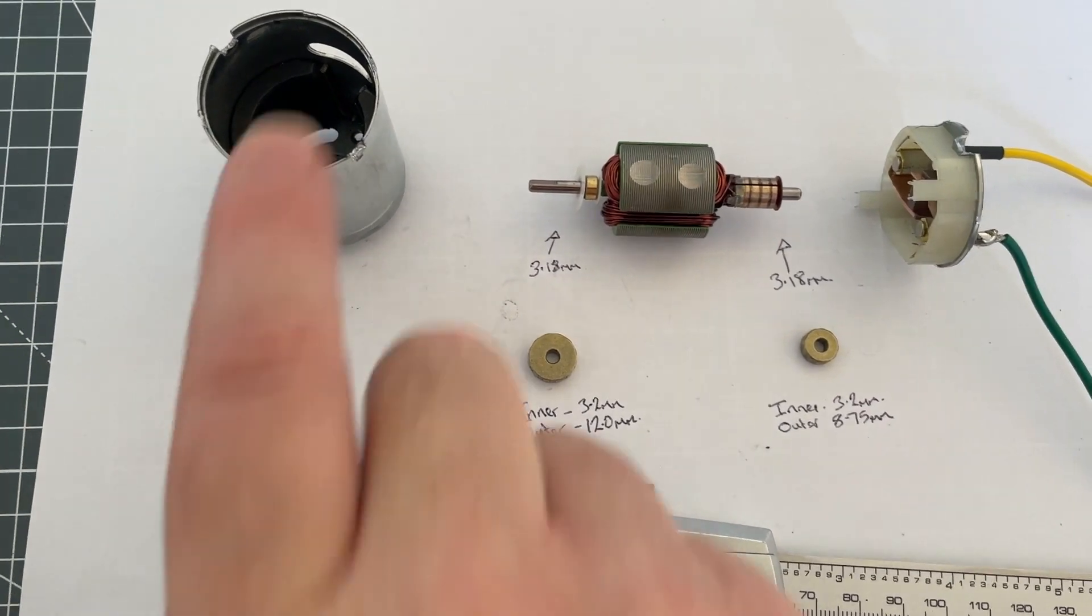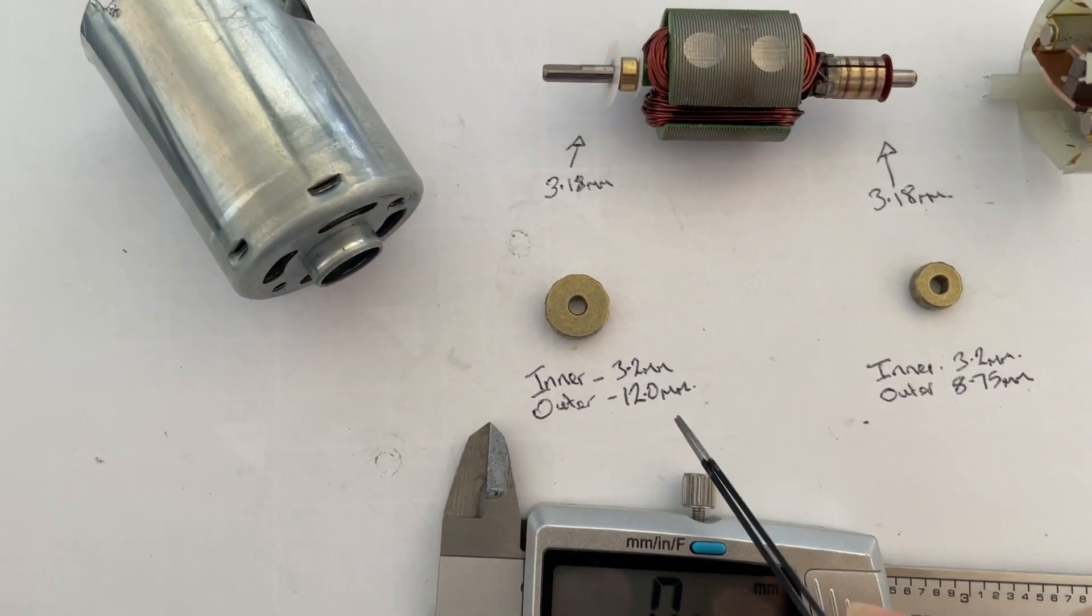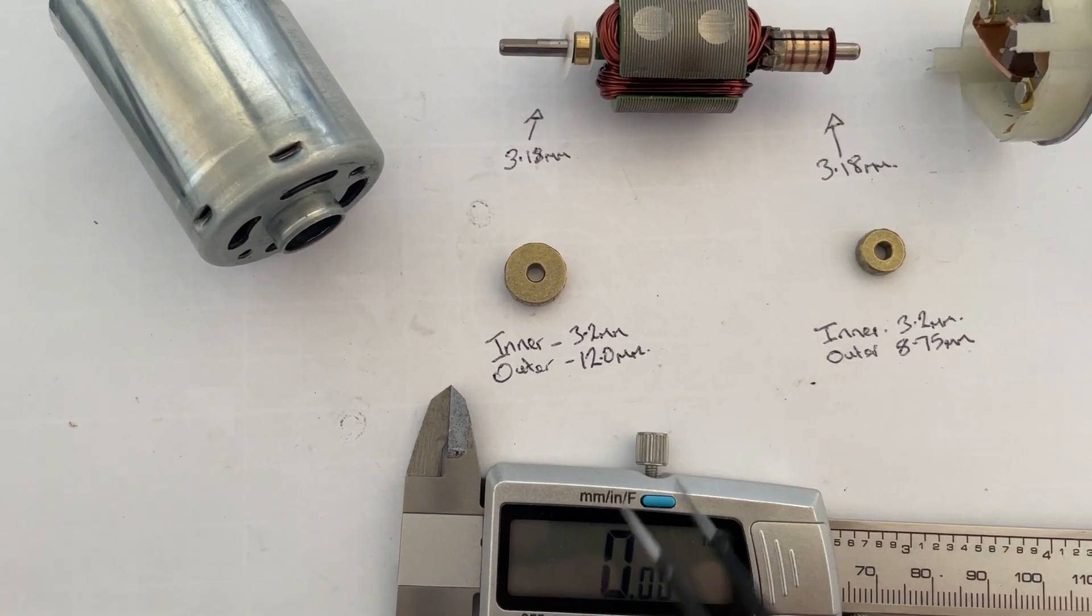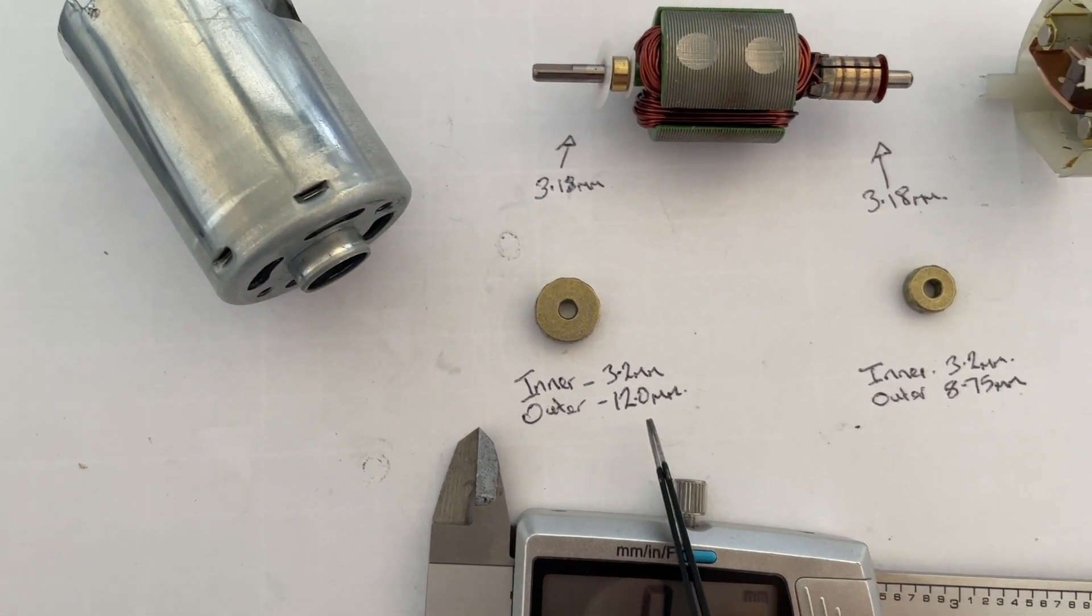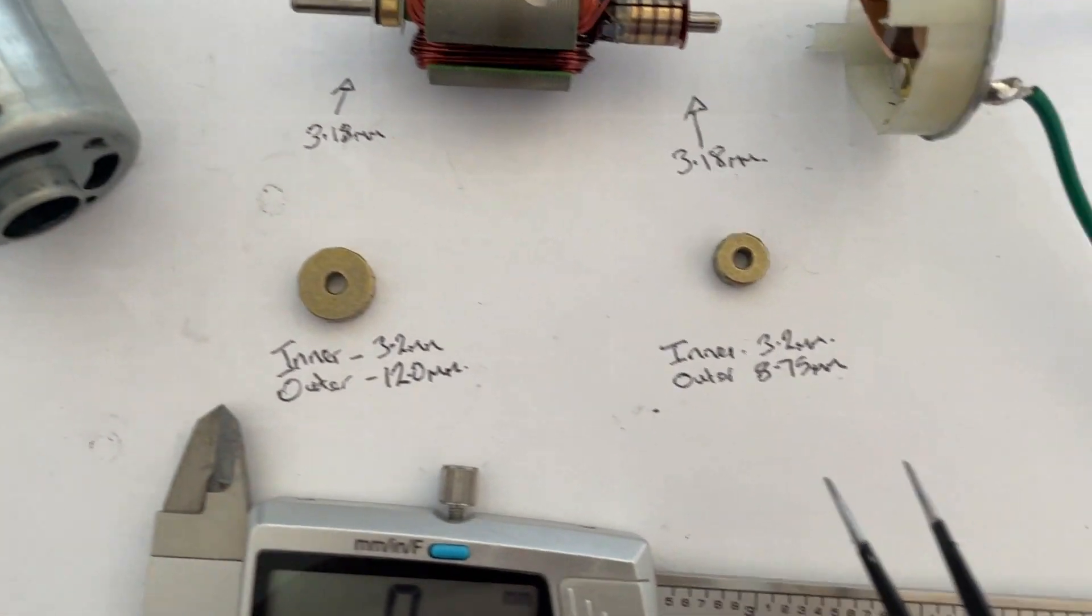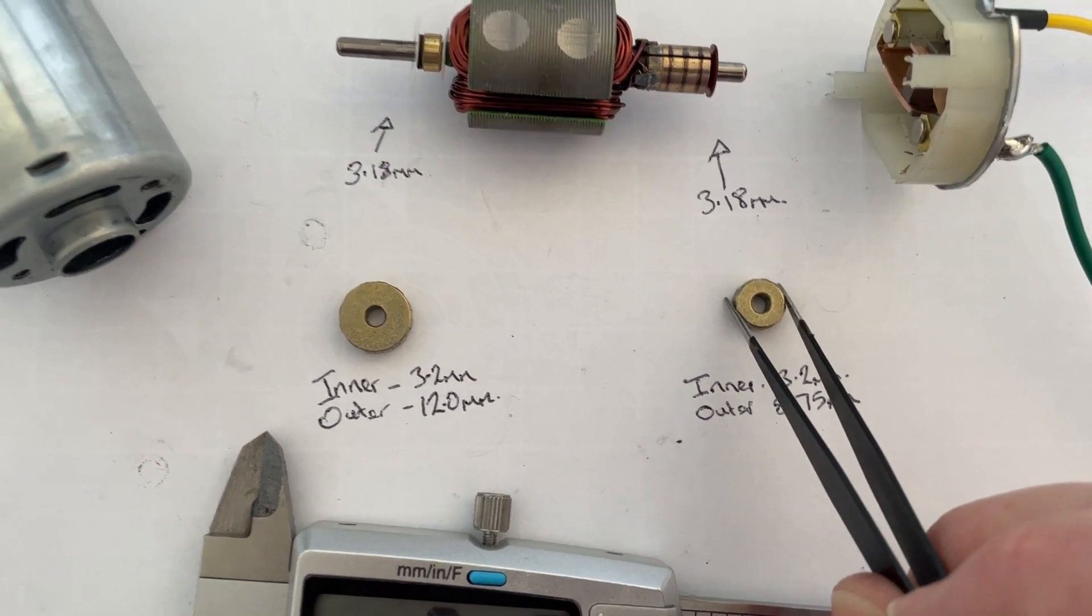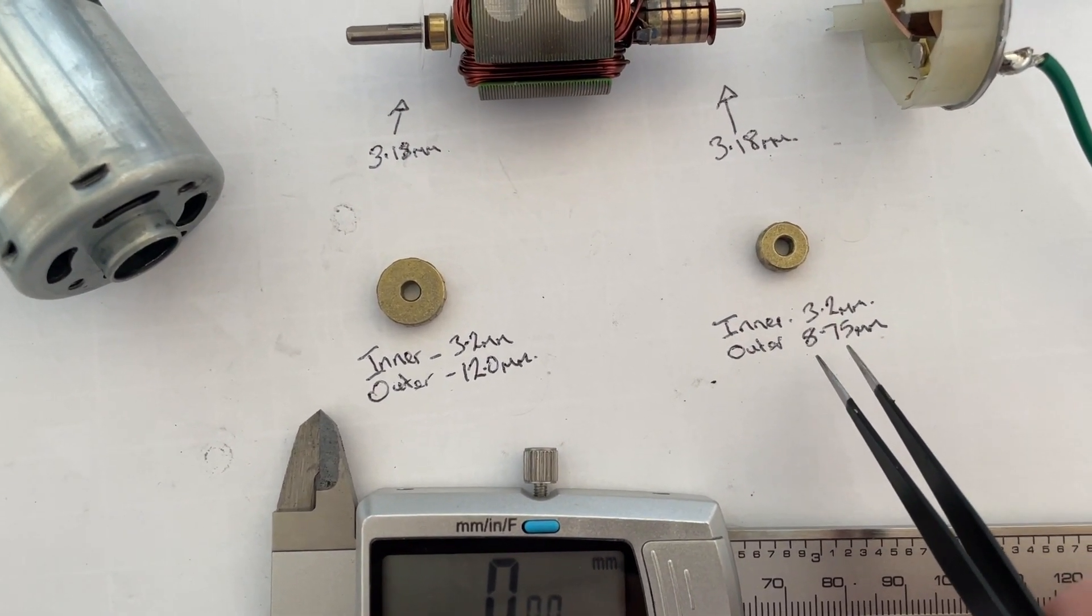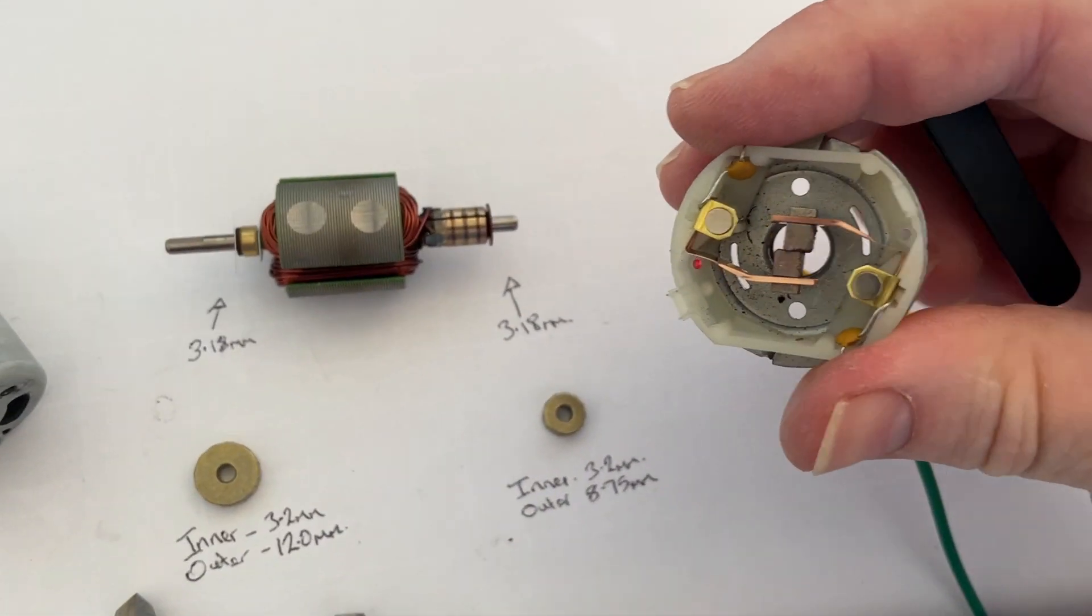The main bearing which is the one on the output, this goes on the out of the can, this end of the can here. The inner measurement is 3.2 millimeters, so that's allowing for a little bit of tolerance of the spindle, and the outer measurement is 12 millimeters. So that's this section here, again the measurement being 3.2 and the outer measurement being around about the eight point seven to eight point seven five.